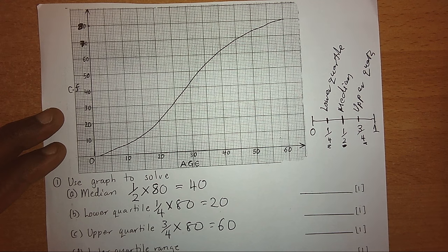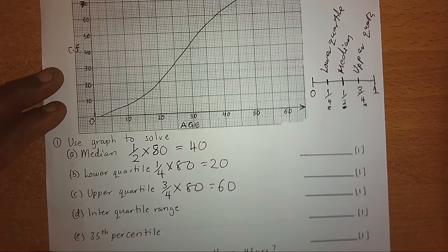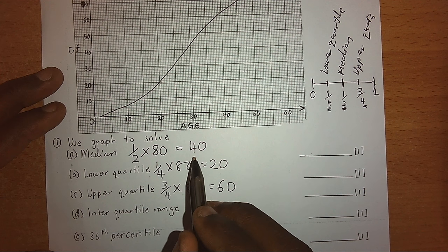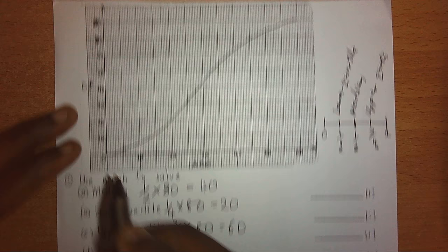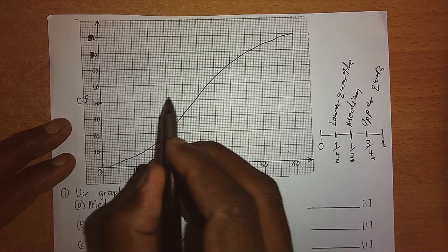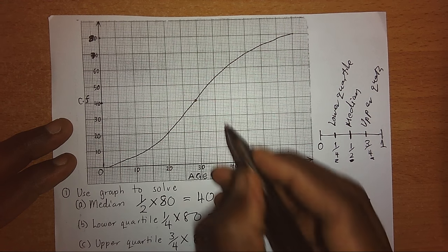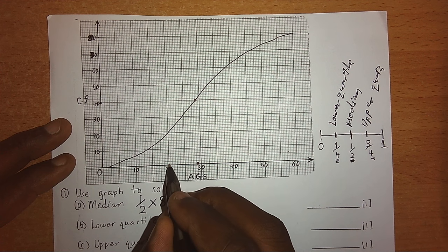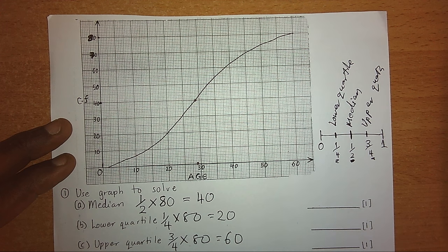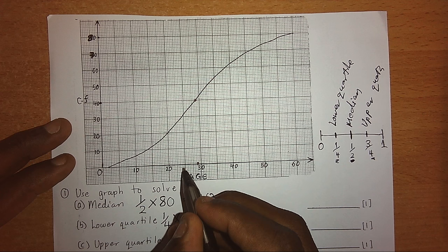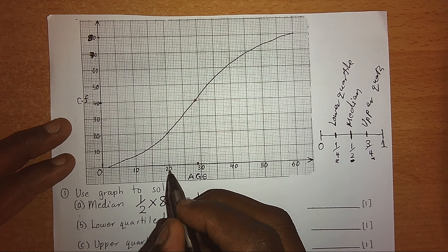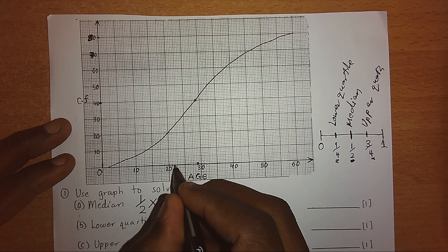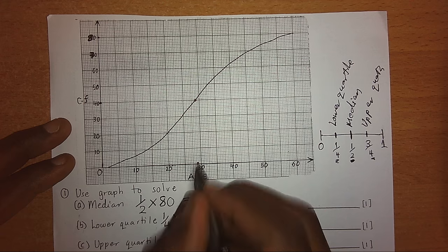Now we go to the cumulative frequency curve and read these values to find the ages. For the median, we go to 40 on the vertical axis, move horizontally until we hit the curve, then drop down to the horizontal axis. Reading carefully — each small box represents 0.5, so two boxes equal 1 — we count across and get approximately 29. So our median is approximately 29.